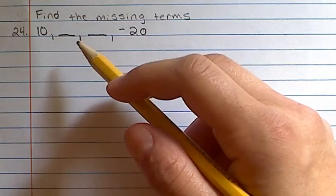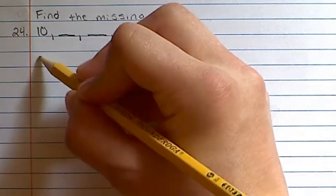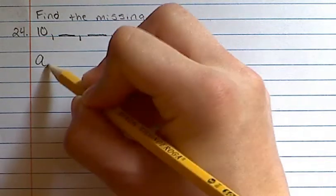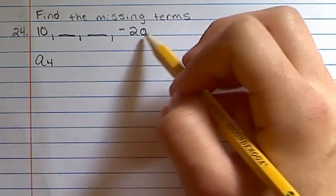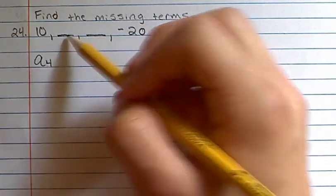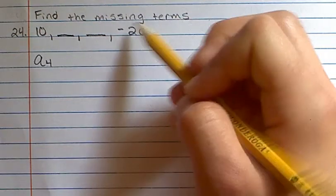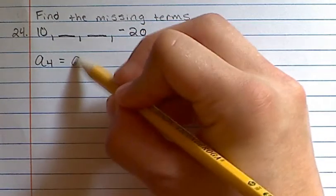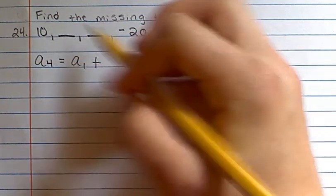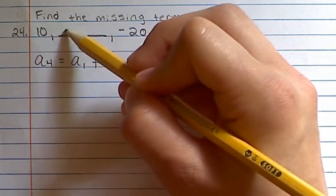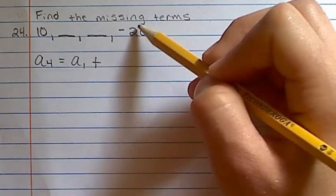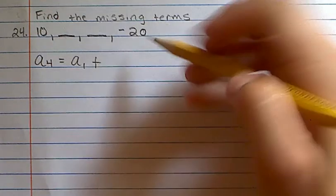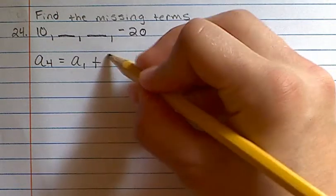So to do that, we use the formula A4 equals A1 plus 3d. Four because we have 1, 2, 3, 4 terms. We go from 1, 2, 3—three differences to get from 10 to negative 20. So we have 3d.